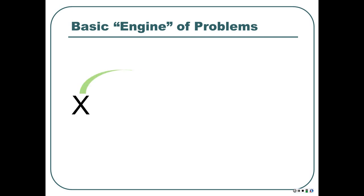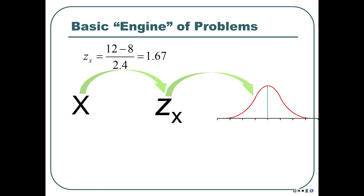Here's the basic engine of problems we talked about before. If we want to convert our raw score into a z-score, we use the formula. Then once we find the z-score, we look it up in the table. Our raw score x is 12, the mean is 8, the standard deviation is 2.4. So you work that out: 1.67. 12 is one and two-thirds standard deviations above the mean of 8.